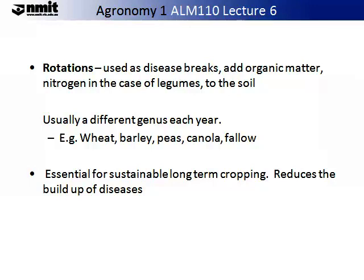A rotation usually involves a different genus each year for a set of years — sometimes two, sometimes three, sometimes four. Rotations are considered essential for sustainable long term cropping. Not only does it allow you to balance your nutrients in your soil but also reduces the build up of disease. In the long term this keeps down your costs.